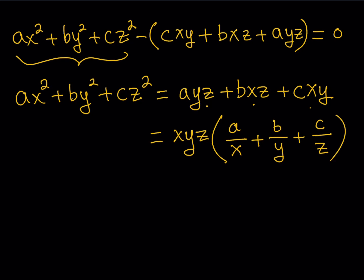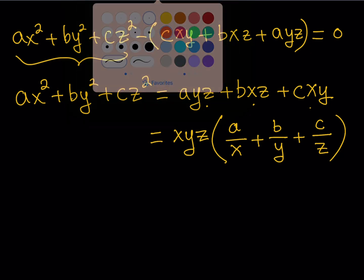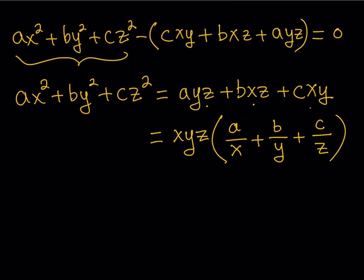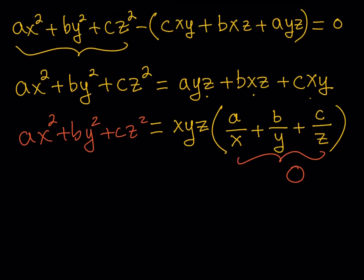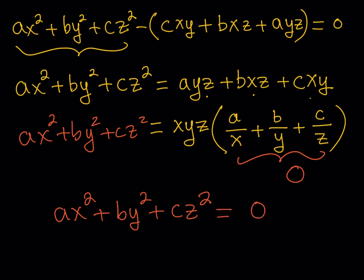Notice what we have inside the parentheses — that's the third expression! We were given that a over x plus b over y plus c over z is equal to 0. So the right-hand side equals xyz times 0, which is 0. Therefore ax squared plus by squared plus cz squared is equal to 0, just like the other given expressions.